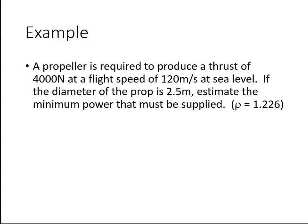A propeller is required to produce a thrust of 4000 newtons at a flight speed of 120 meters per second at sea level. If the diameter of the propeller is 2.5 meters, estimate the minimum power that must be supplied.